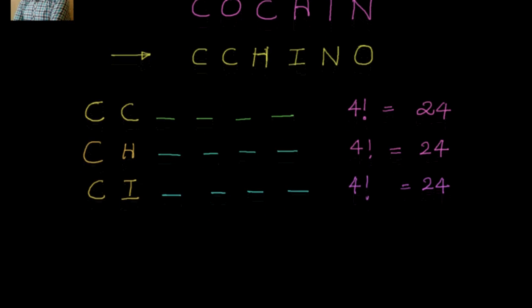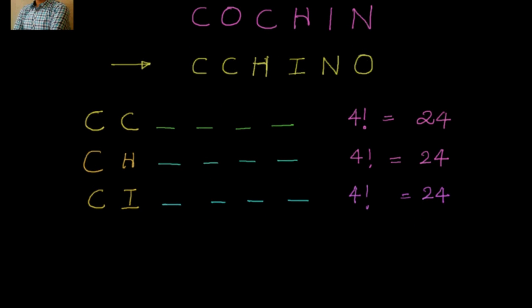Now after that, next one after CI is CN in the alphabetical order. So we go to CN. Again 4 more slots to be filled. With CN over, C, H, I, O we have to fill. Again no repetitions there, so factorial 4 again, one more time, 24.